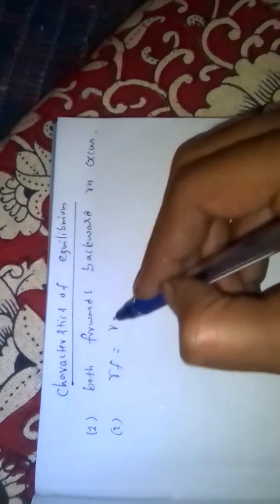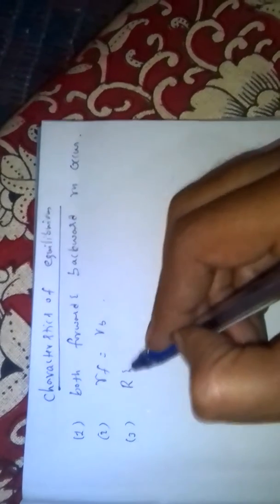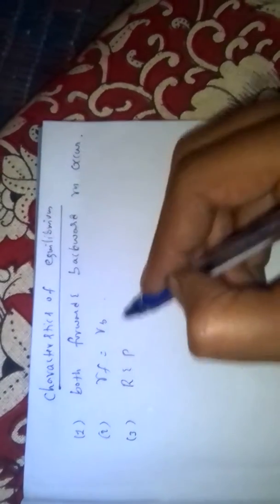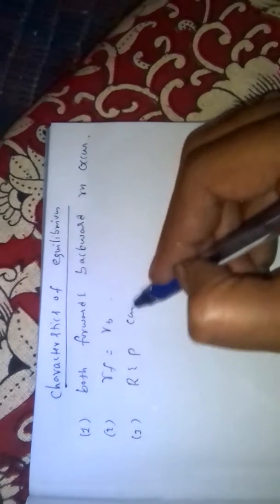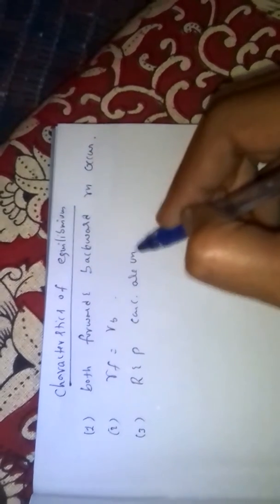At equilibrium state, the rate of forward reaction is equal to the rate of backward reaction. Also at equilibrium state, the concentrations of reactants and products are unchanged.